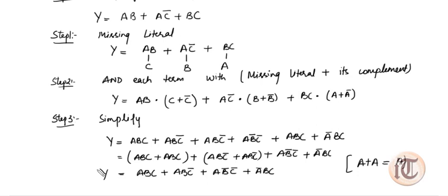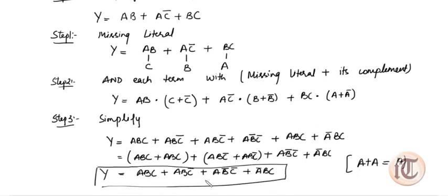So the standard SOP form is: ABC + ABC̄ + AB̄C̄ + ĀBC. This is a standard SOP form because in this expression there are three literals, and in each product term all the literals appear, whether in complemented or uncomplemented form. This is how we convert SOP into standard SOP.